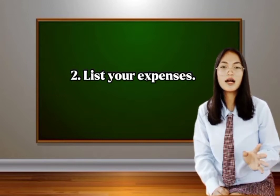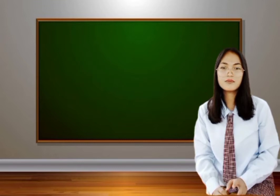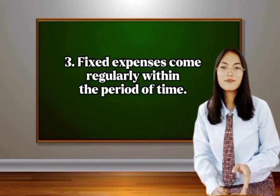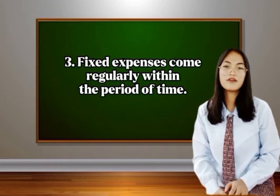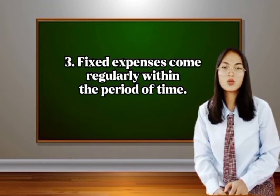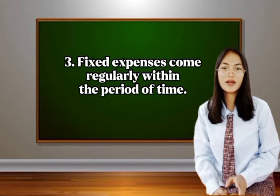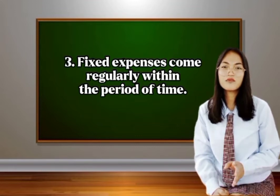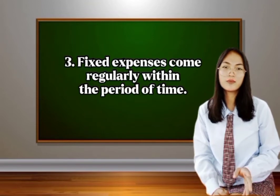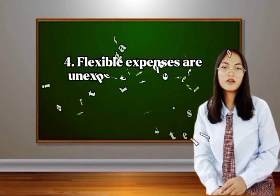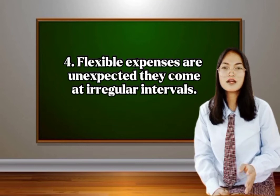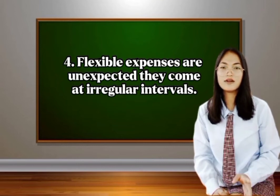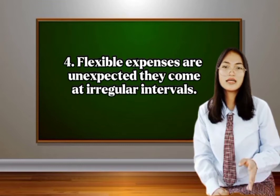Number three: fixed expenses come regularly within a period of time. Examples include school fees, rent, payments for utilities, food, and transportation. Number four: flexible expenses are unexpected and come at irregular intervals. Examples include clothing, recreation, and entertainment.